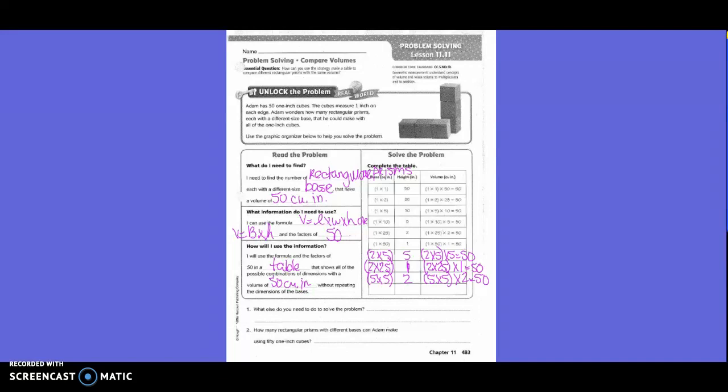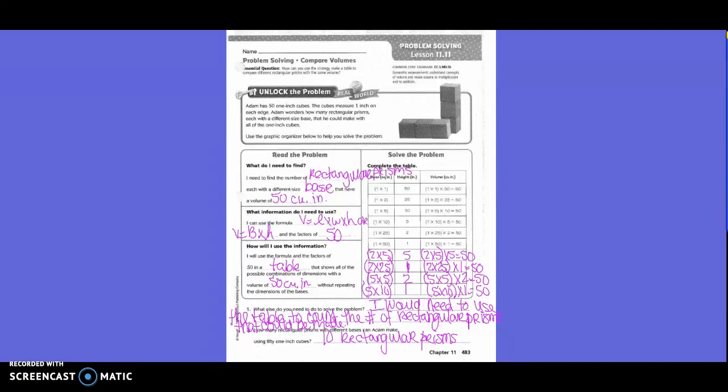What could I do for my bottom one? 5 times 10. 5 times 10. What is 5 times 10? 50. So what else do you need to do to solve the problem? I would need to use the table to count the number of rectangular prisms that could be made. How many rectangular prisms with different bases can Adam make using 51 inch cubes? 10 rectangular prisms.